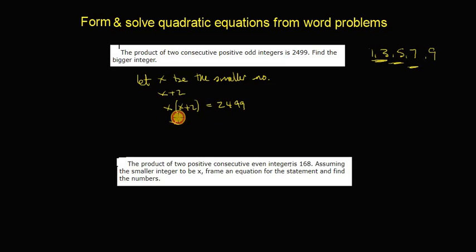So we're going to get x squared plus 2x is equal to 2,499. Now, we've now formed the quadratic equation.